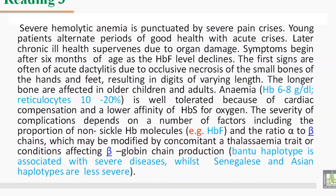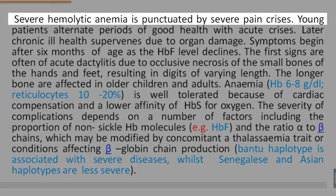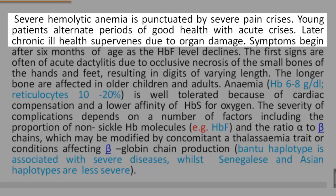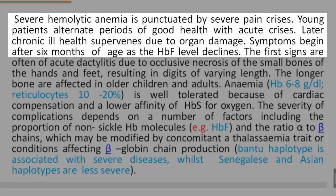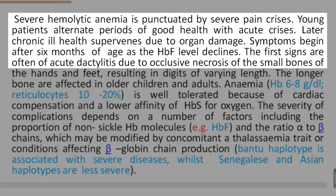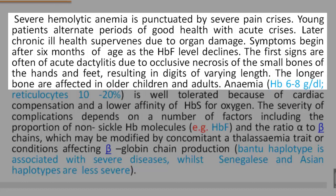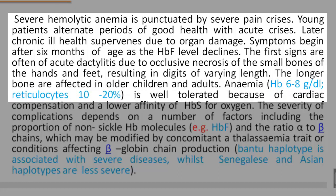Reading 3. Severe hemolytic anemia is punctuated by a severe pain crisis. Young patients alternate periods of good health with acute crisis. Later, chronic ill health supervenes due to organ damage. Symptoms begin after 6 months of age as the HBF level declines. The first signs are often of acute dactylitis due to occlusive necrosis of the small bones of the hands and feet, resulting in digits of varying length. The longer bones are affected in older children and adults. Anemia is well-tolerated because of cardiac compensation and a lower affinity of HBS for oxygen.